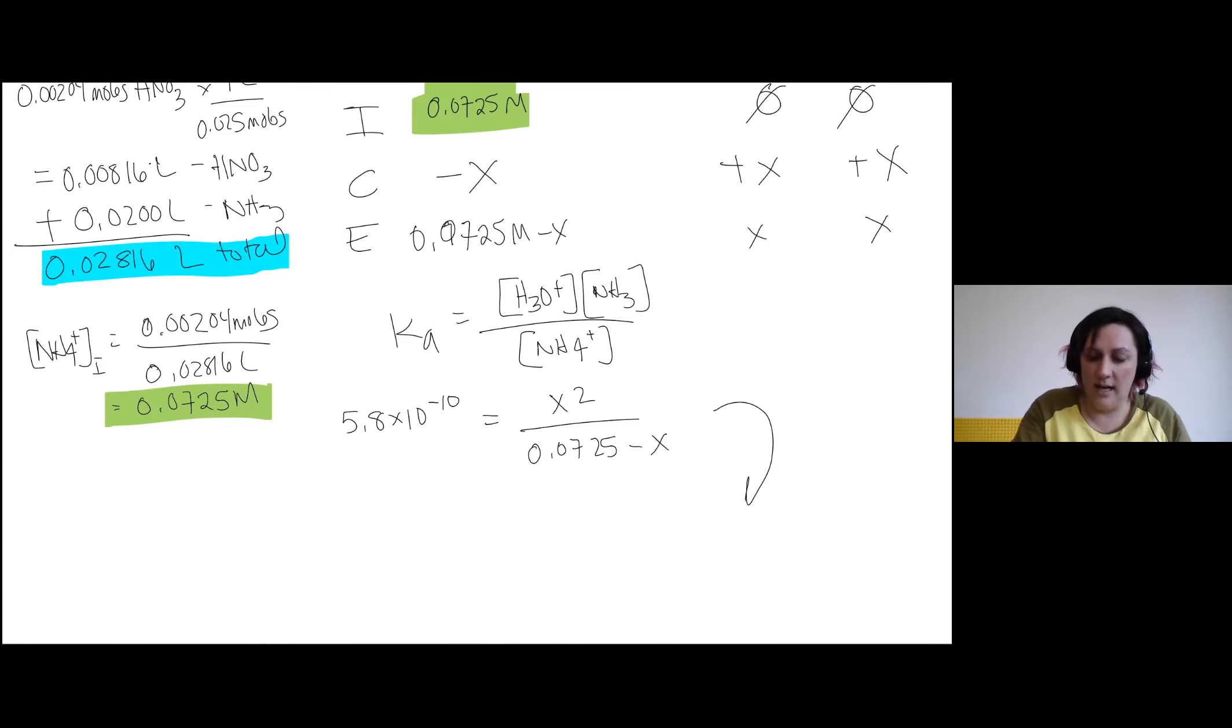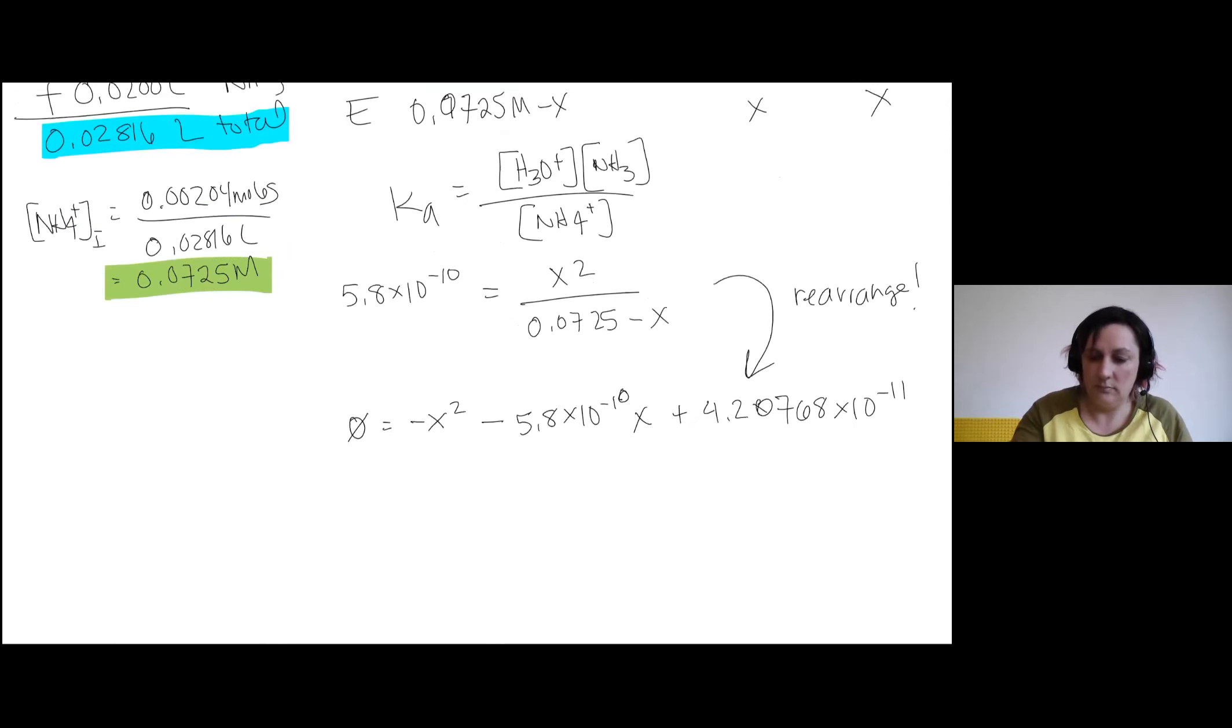So I'm going to do a lot of rearranging and get to something that looks like zero is equal to negative X squared minus 5.8 times 10 to the negative 10 X plus 4.2 oops, 7, 6, 8 times 10 to the negative 11. Okay.